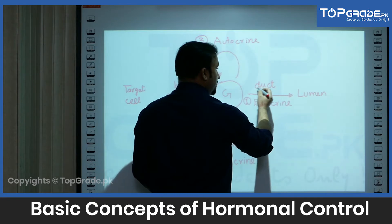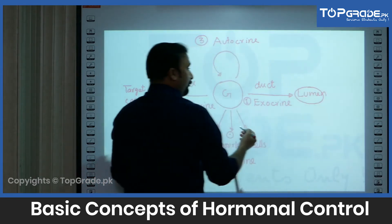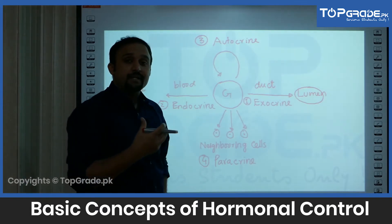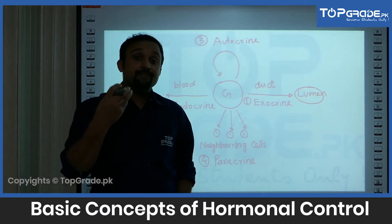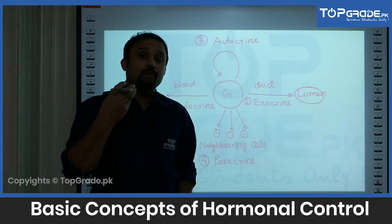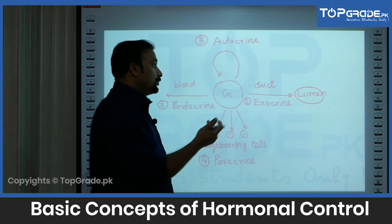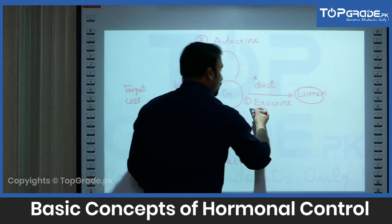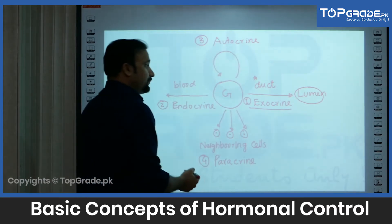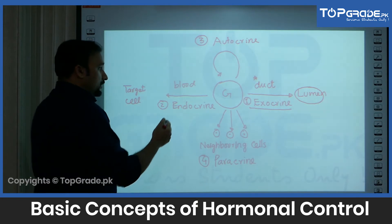For example, the salivary glands secrete saliva via the salivary ducts into the lumen of our oral cavity. Glands that release their secretion into a lumen through a duct are labeled as exocrine glands. Then we have another category of glands.